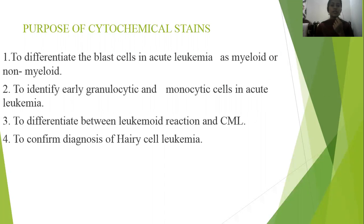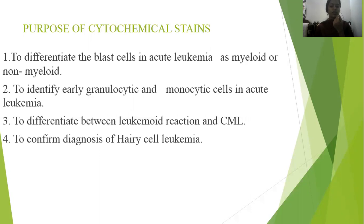The first purpose of cytochemistry is to differentiate blast cells in acute leukemia as myeloid or lymphoid. The second purpose is to identify early granulocytic and monocytic cells in acute leukemia. The third purpose is to differentiate between leukemoid reaction and CML cells in chronic myeloid leukemia, and to confirm the diagnosis of hairy cell leukemia.